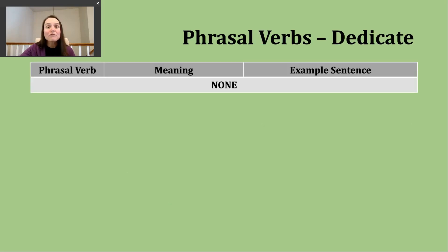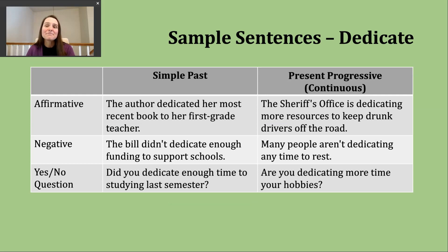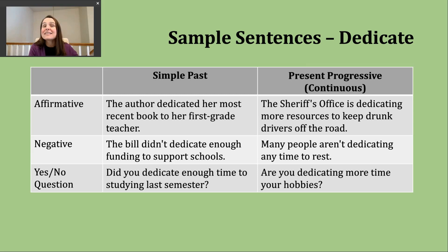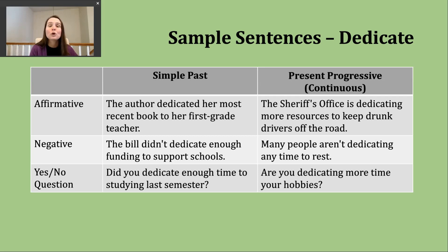There are no phrasal verbs to study, so let's move on to using this verb in the simple past and present progressive. We'll start with the simple past, which we use to talk about activities completed at some known point in the past. Time signals like 'yesterday' or 'last week' may appear but aren't required. The affirmative structure is: subject + past tense verb. Example: 'The author dedicated her most recent book to her first grade teacher.'